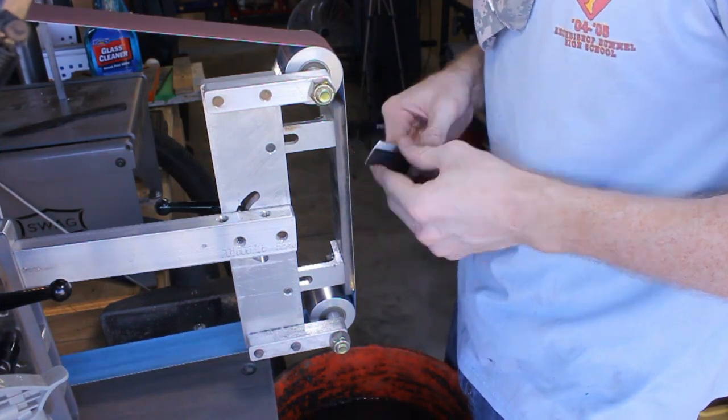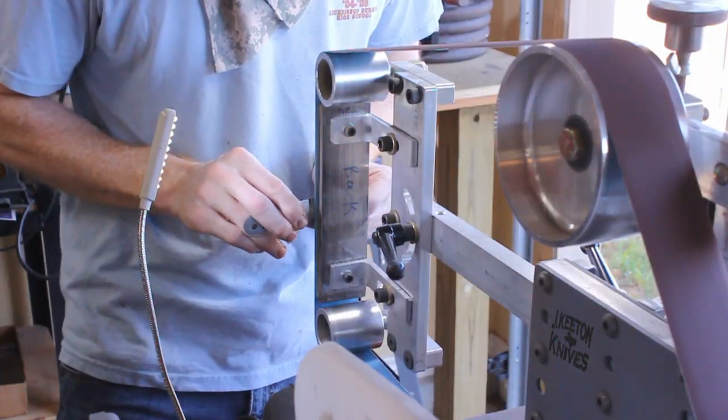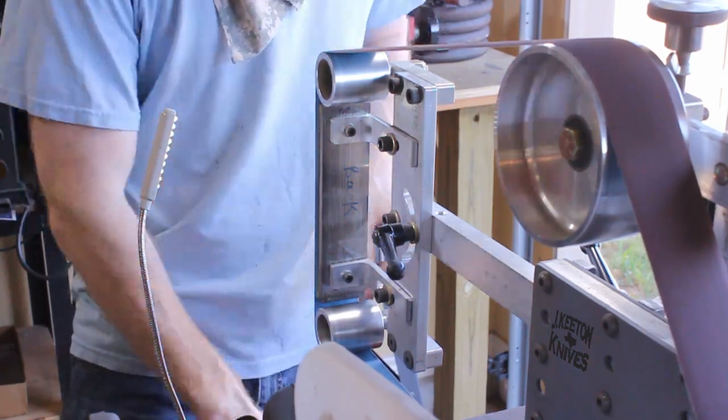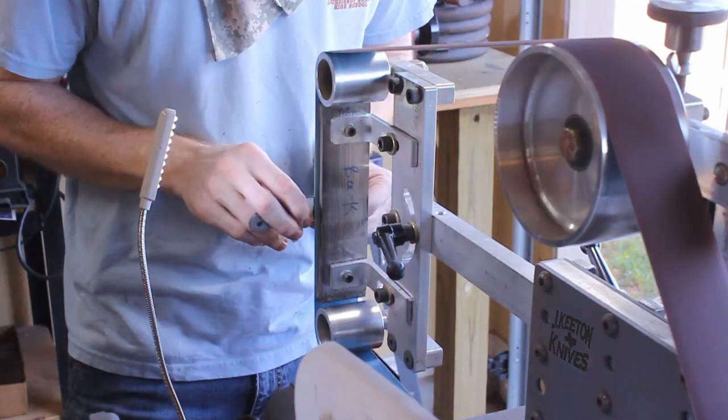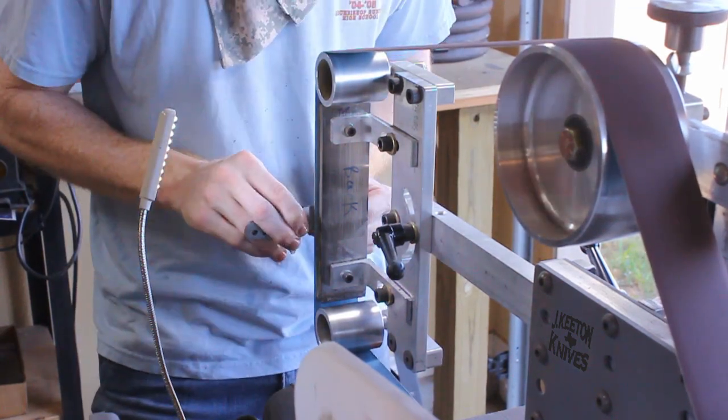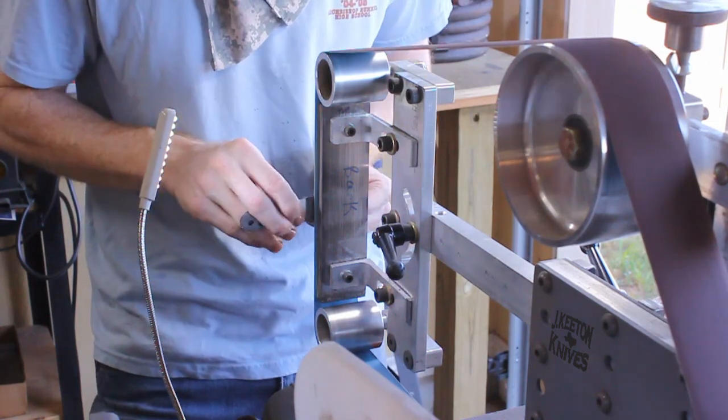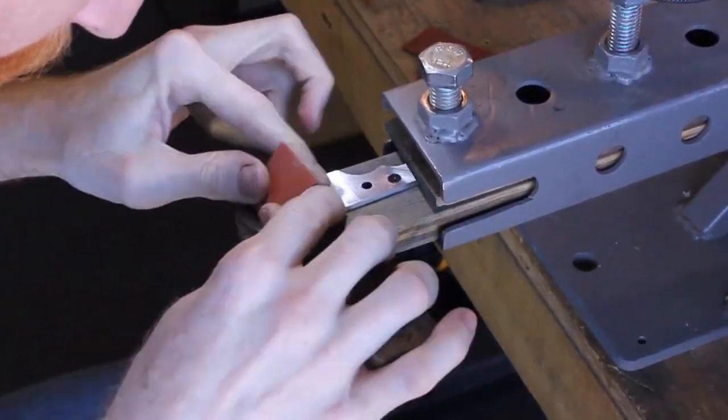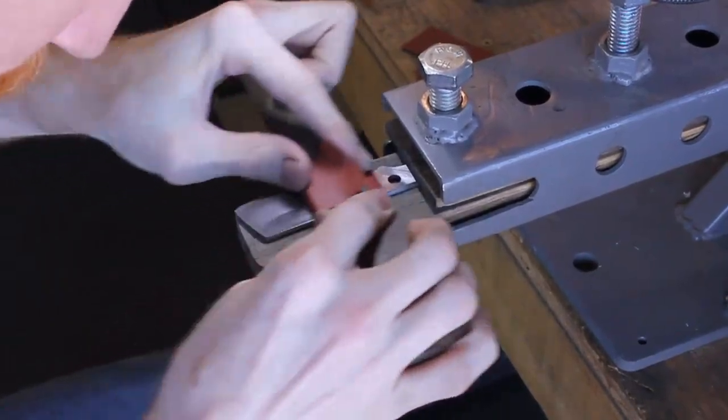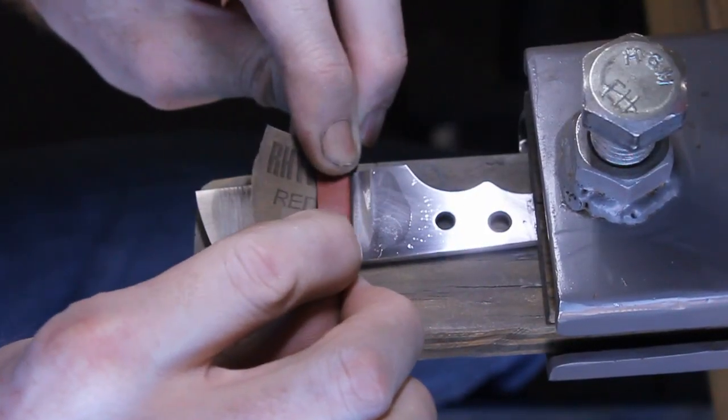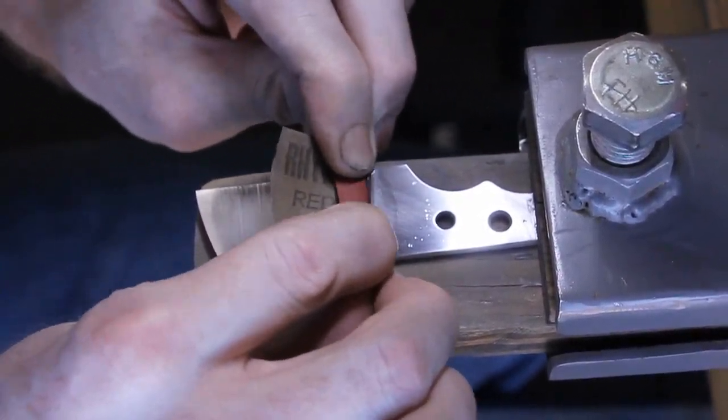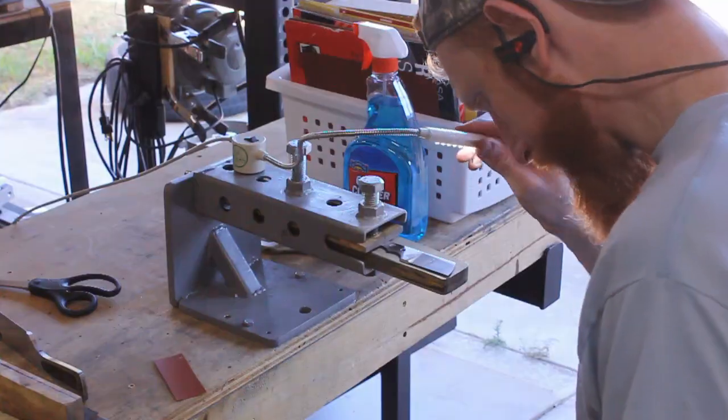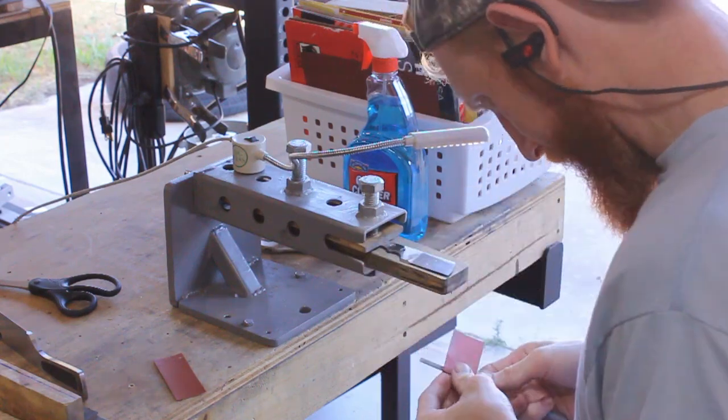After tempering, we brought the blade to the belt sander and started cleaning it up with a 120 grit belt, getting off all the crud from heat treating and working that bevel up closer to the spine. I ended up going with a full flat grind on this blade. At first I came over to hand sanding with 320 and tried to blend it together, but it didn't work out - I had some pretty big scratches that were driving me nuts.